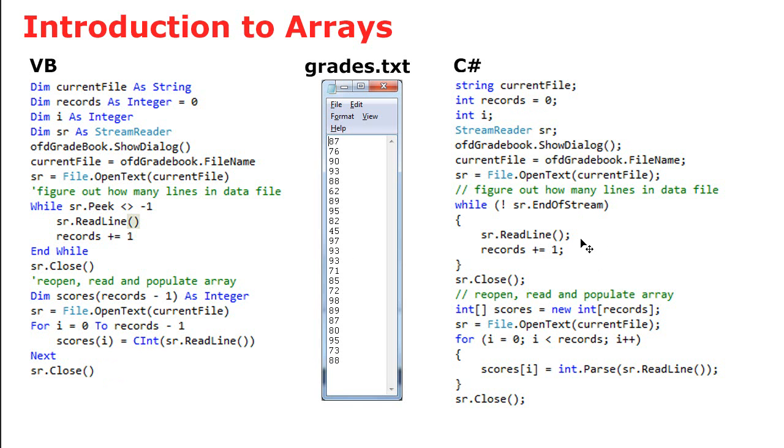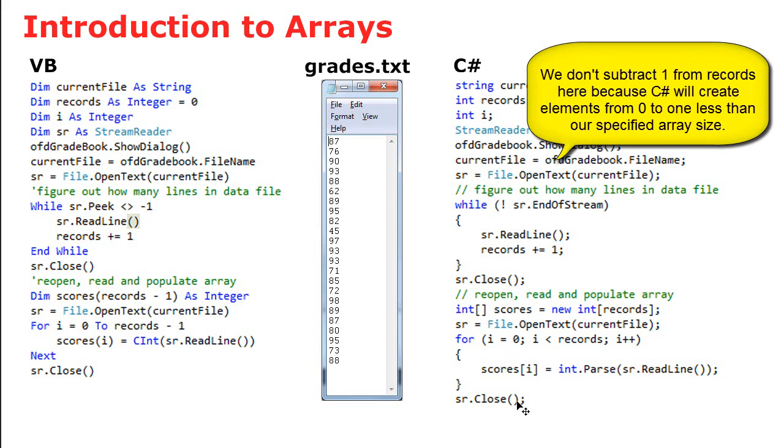Doing the same thing over here in C#. First of all, we're reading the data once to determine how many elements there are, how many lines there are. Then we're going to declare our array accordingly, and then read the data from the data file into the array and populate it.